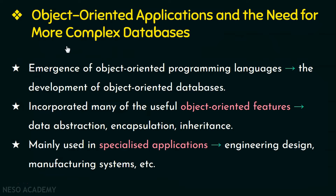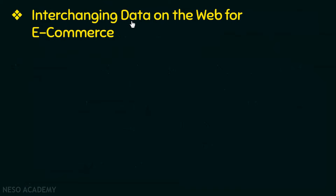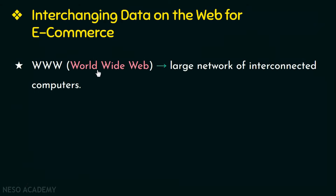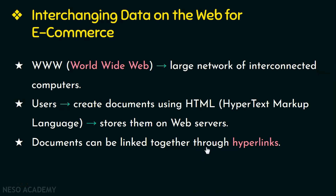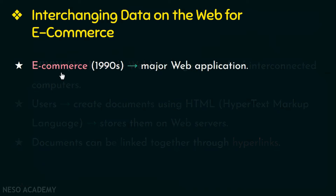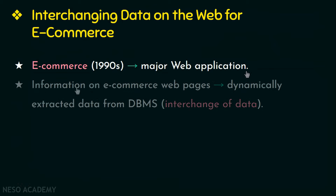Next we have interchanging data on the web for e-commerce. The World Wide Web is a large network of interconnected computers where users can create documents using HTML and store them on web servers so that other users or web clients can access these documents. These documents can be linked to other documents through pointers called hyperlinks.